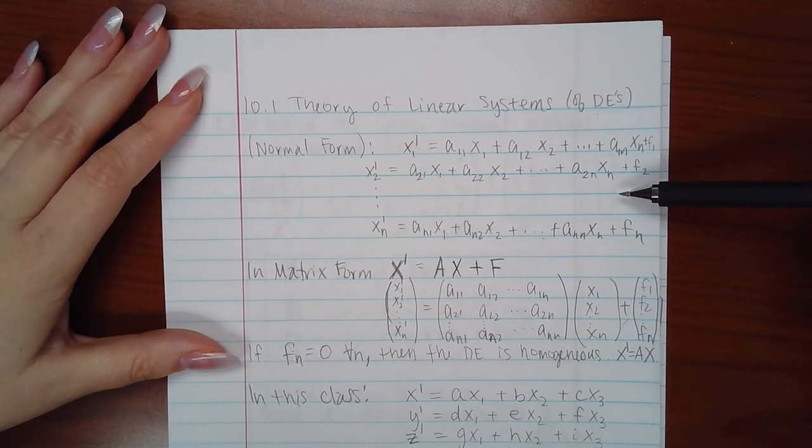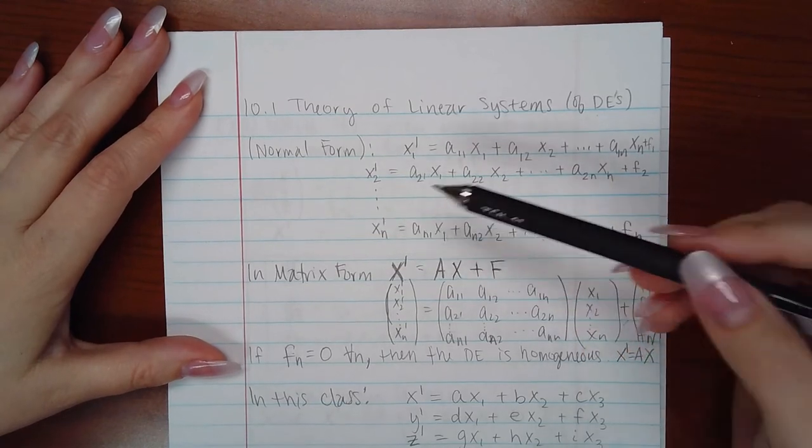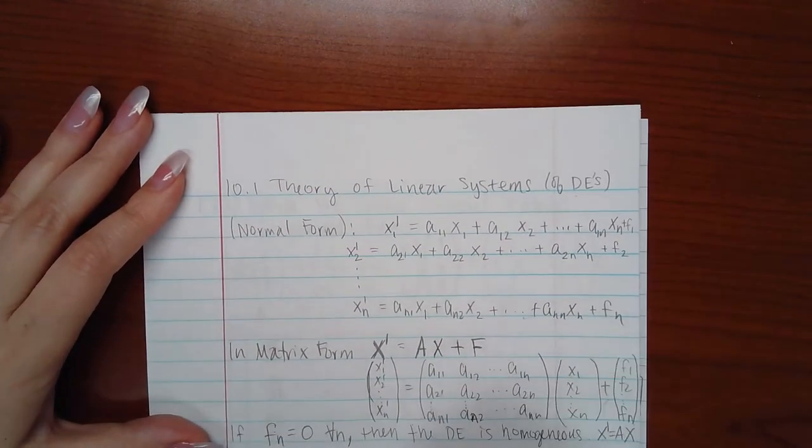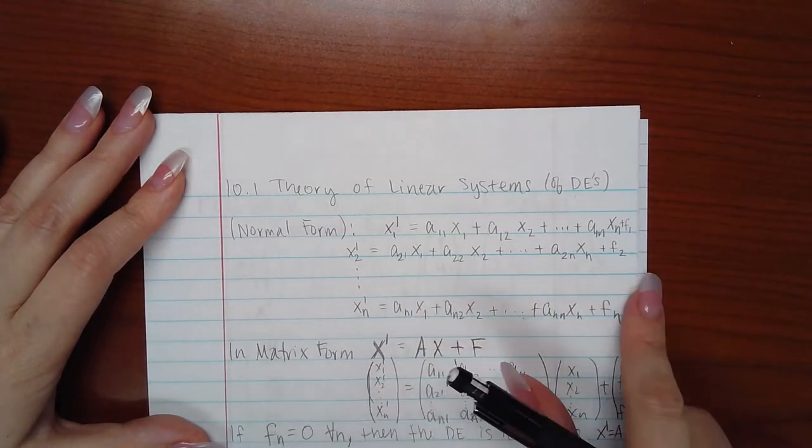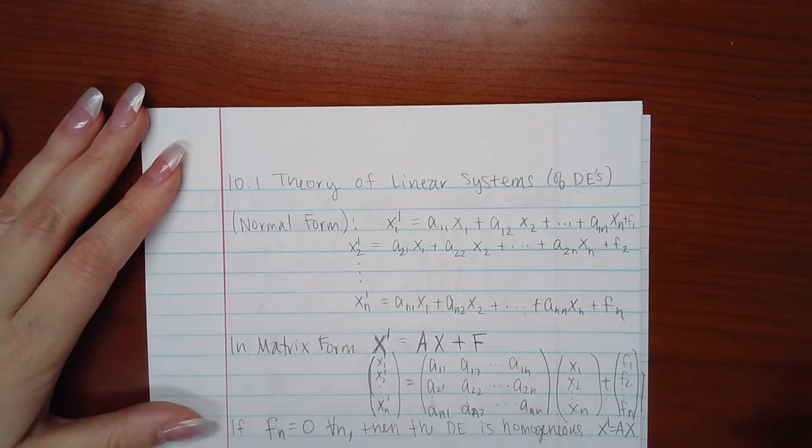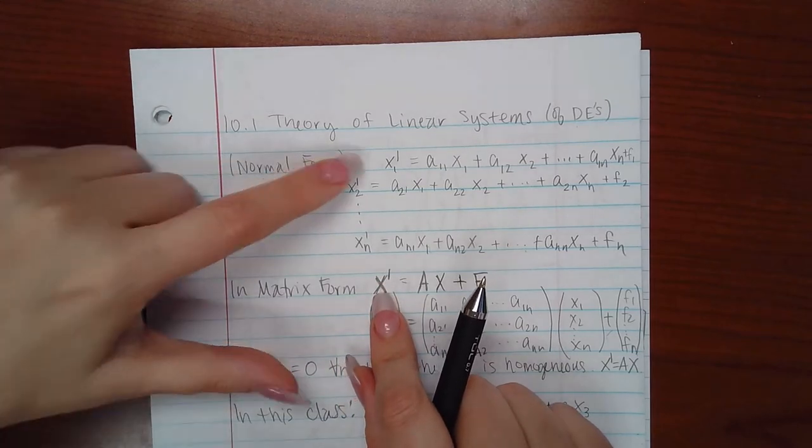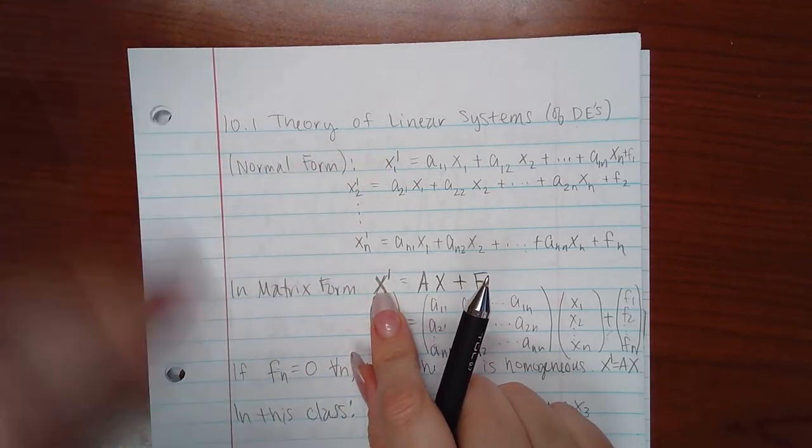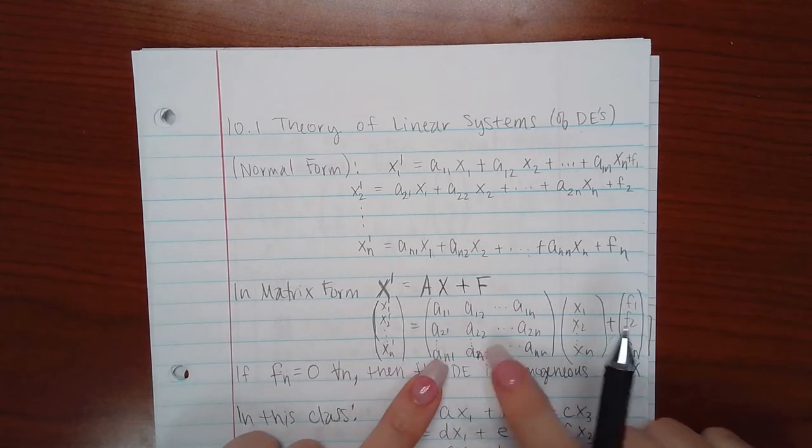The first form is called the normal form. It's where you have your primes of your variables listed on one side, and then you have your variables without the primes listed on the right-hand side with their coefficients. So you can write all of the X primes as a column matrix like this and denote it just by X prime, bold because it's a vector or a matrix.